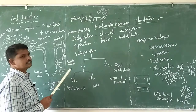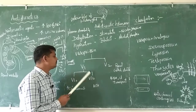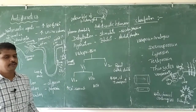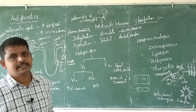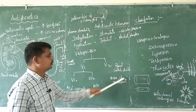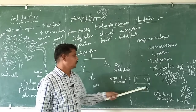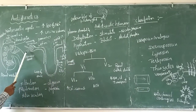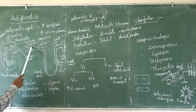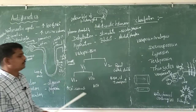Vasopressin or anti-diuretic hormone basically binds to two receptors: V1 receptors and V2 receptors. V1 receptors are present in smooth muscle — in blood vessels and in the CNS. V1 receptors are further divided into V1a and V1b. V1a receptors increase intracellular calcium levels, causing muscle contraction, which contracts blood vessels. When the blood vessel contracts, its diameter decreases, which decreases the blood filtration rate, and ultimately urine formation is decreased.